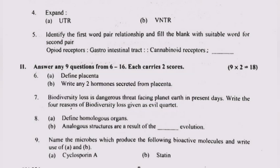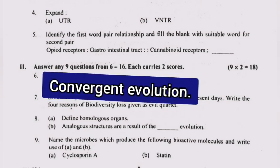Question 9: Analogous structures are a result of convergent evolution.